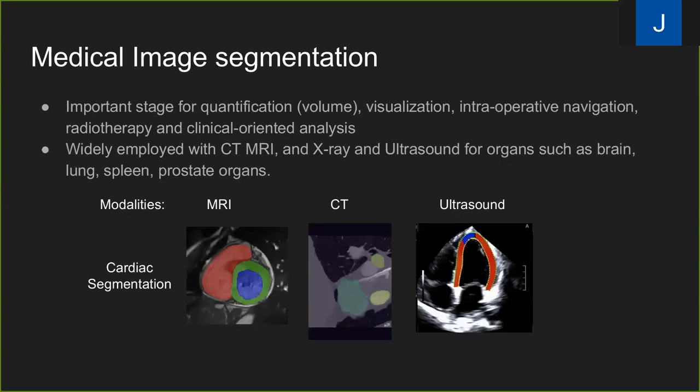Medical image segmentation is a fundamental step for clinically-oriented analysis, which is important for visualization. Segmentations are applied with different image modalities, and here we list an example to characterize the heart by MRI, CT, and other modalities based on the diseases that it may have.